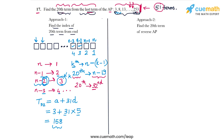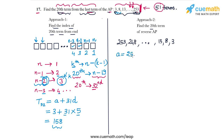Now for the second approach: we consider the reverse AP — the AP that is the reverse of the original. The original AP is 3, 8, 13, ..., 253. The reverse AP starts at 253, then 248, and so on, all the way to 3. The common difference of this reversed AP is −5. We simply need to find the 20th term of this reverse AP.